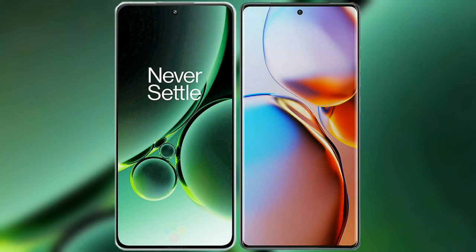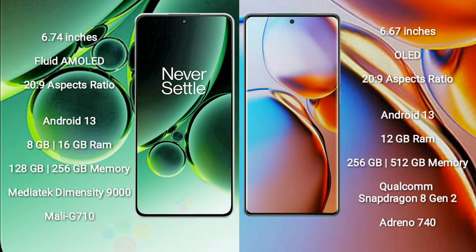I will compare the new OnePlus Nord 3 with Motorola Edge 40 Pro. OnePlus Nord 3 comes with a 6.74-inch flat AMOLED display and a 20:9 aspect ratio. Motorola Edge 40 Pro comes with a 6.67-inch OLED display and a 20:9 aspect ratio.